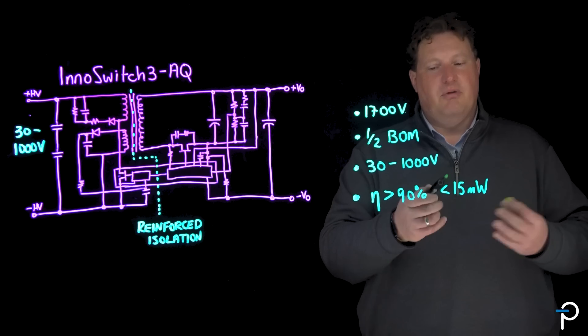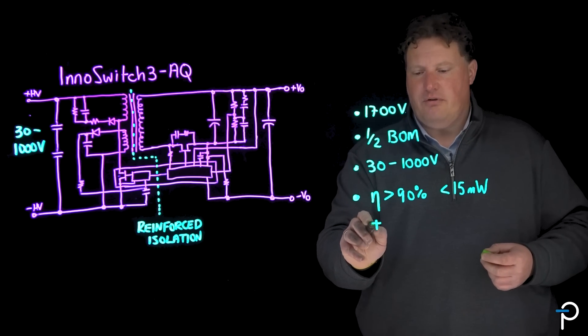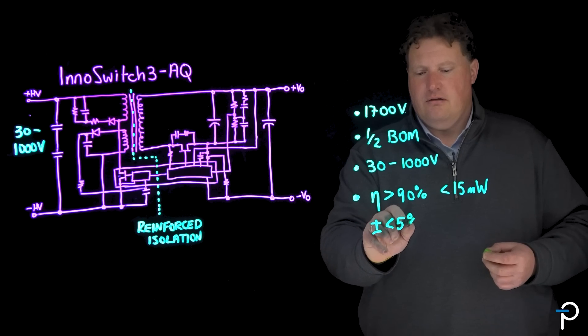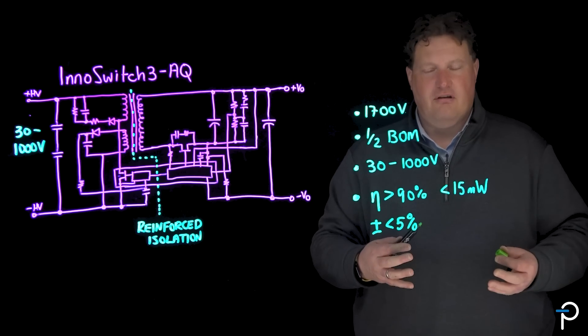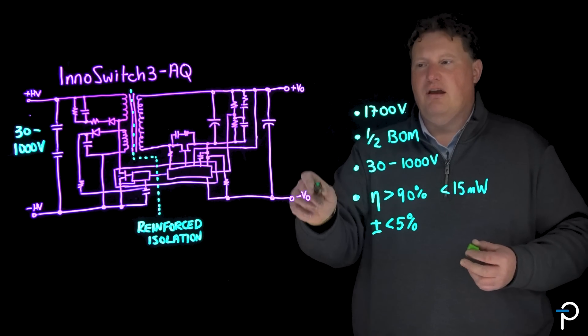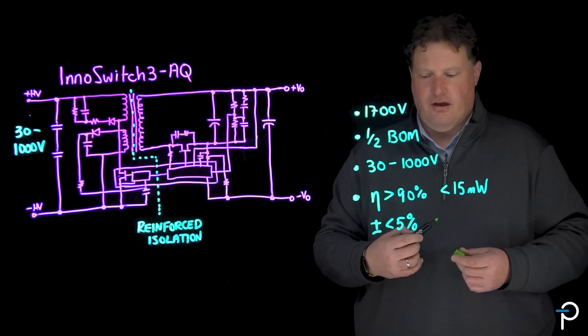The regulation on the output itself is better than plus or minus 5%, including line, load, transient, and temperature. That improvement in regulation allows the elimination of a DC to DC converter, which is common in discrete designs.